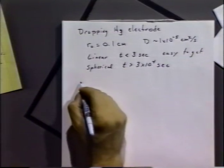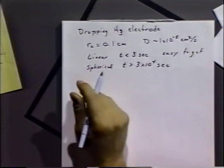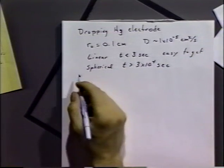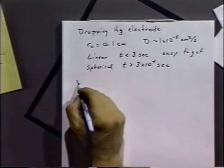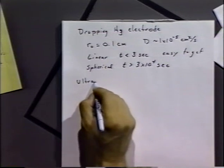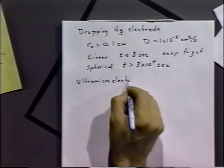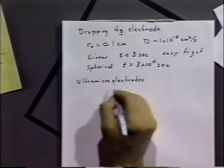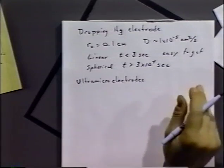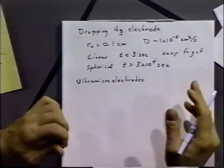What we can see is spherical type diffusion for ultramicroelectrodes, or microelectrodes. Ultramicroelectrodes is just discriminating against what we used to call microelectrodes, which were the normal size electrodes, and now they call them ultramicroelectrodes.